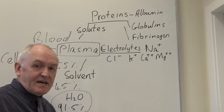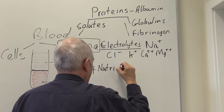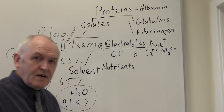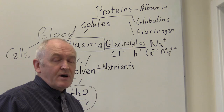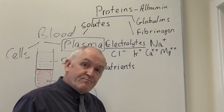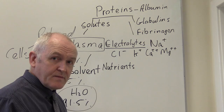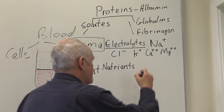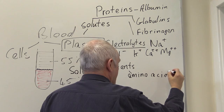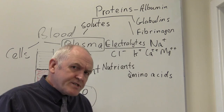We've got proteins in the plasma, we've got electrolytes in the plasma, and we've also got nutrients. There are going to be lots of nutrients in the plasma, absorbed from the gut and traveling in the blood to the tissues where they are required. For example, the breakdown products of protein digestion — proteins are broken down to amino acids in the GI tract.